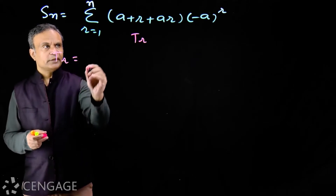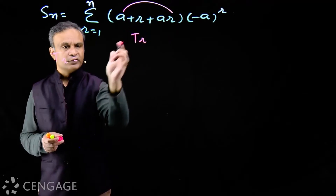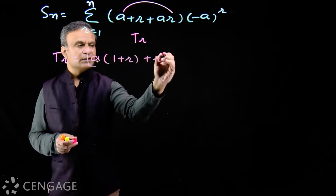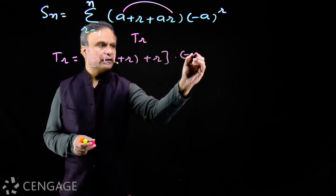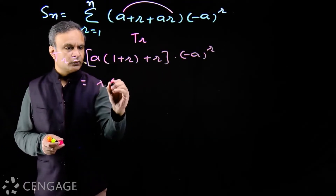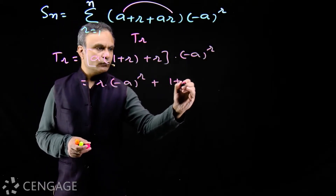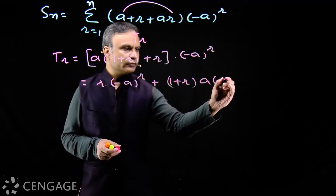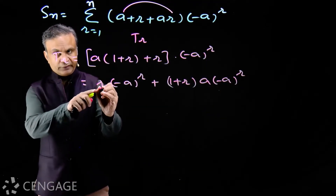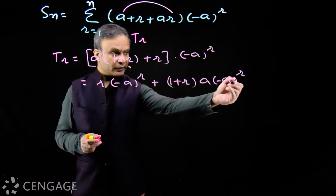Let's write term Tr. From these two terms we can take a common, so we have a multiplied by (1 + r + r), multiplied by (−a)^r. Expanding: we have a·r·(−a)^(r+1) plus r multiplied by a multiplied by (−a)^r. So we have r here, (1+r) here, (−a)^r here, and a·(−a)^r here.